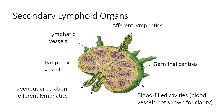Here you can see the secondary lymphoid organs and their structure. You have the lymphatic vessels, the germinal centers, the lymphatics, the blood-filled cavities, as well as the efferent lymphatics.